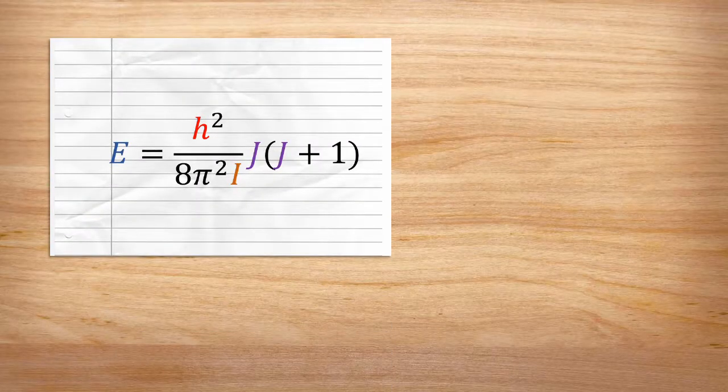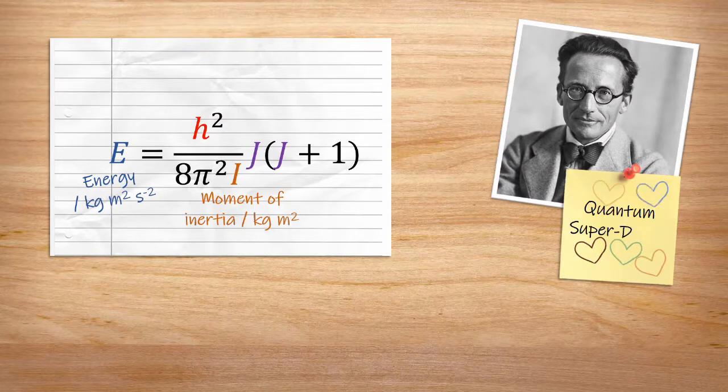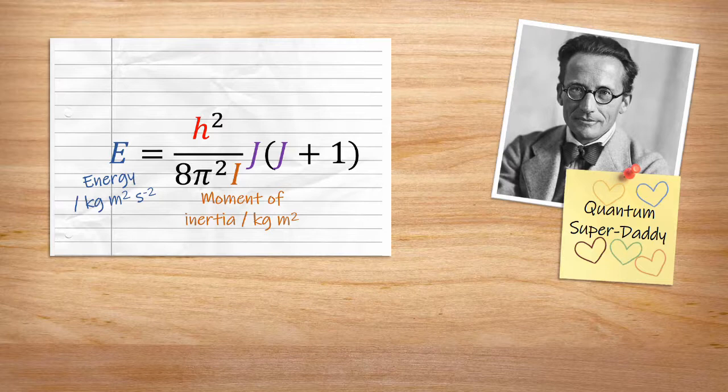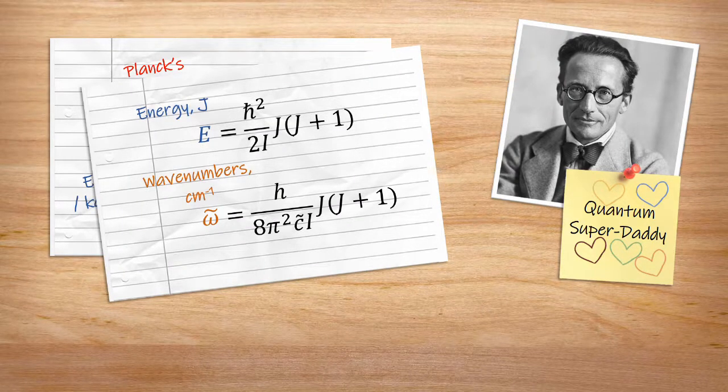This moment of inertia, I, also pops up in the solution to the Schrodinger equation for the energy of a system just like this. This equation has all the usual suspects in it. Planck's constant for relating frequency to energy and π because we're dealing with rotations. The J in this case refers to the quantum number of the energy level. For rotations, this begins at zero. We can also reformulate it in a few different ways, such as using the reduced Planck's constant or adding in the speed of light to convert the energy to wave numbers.